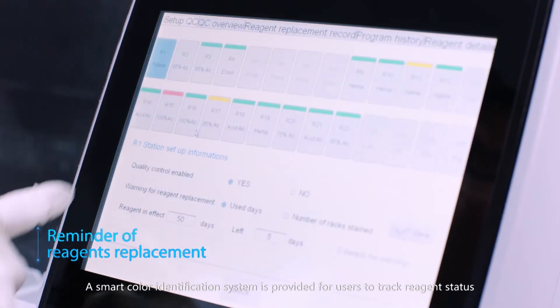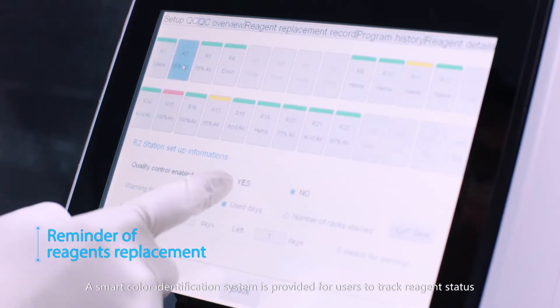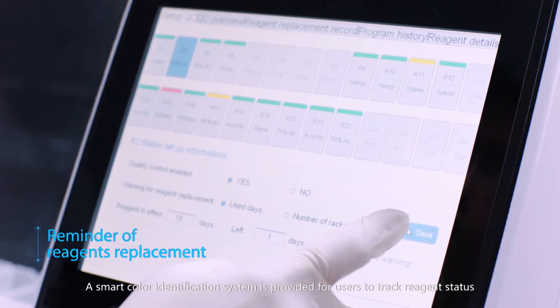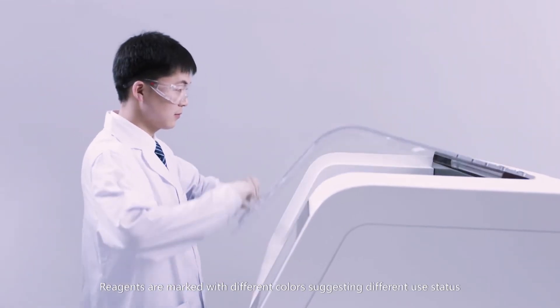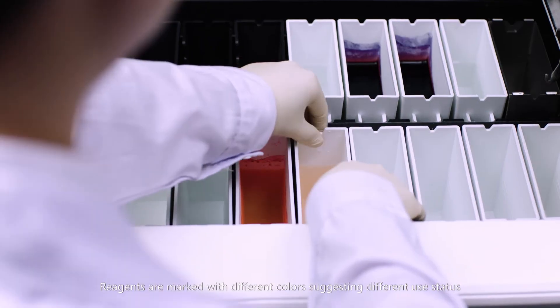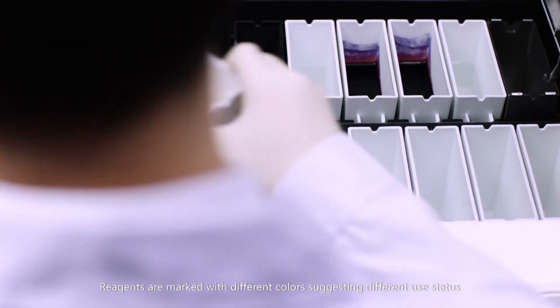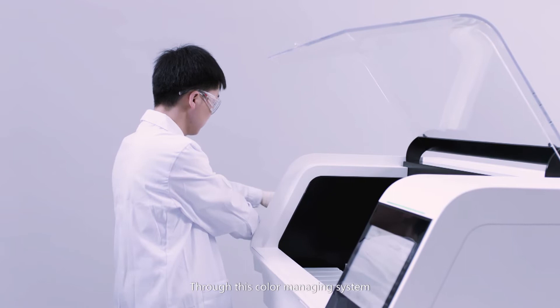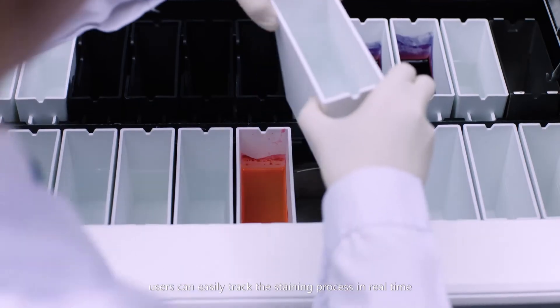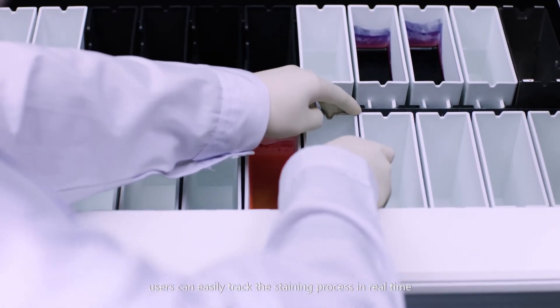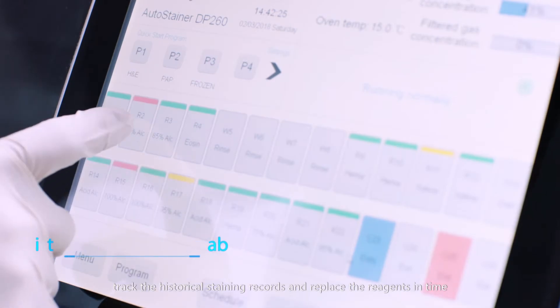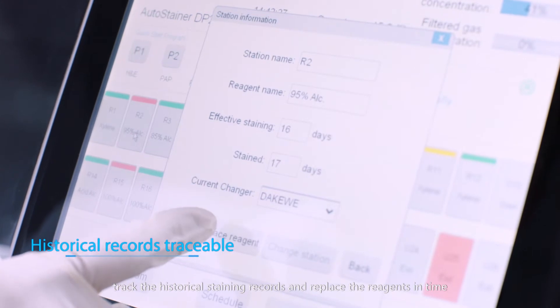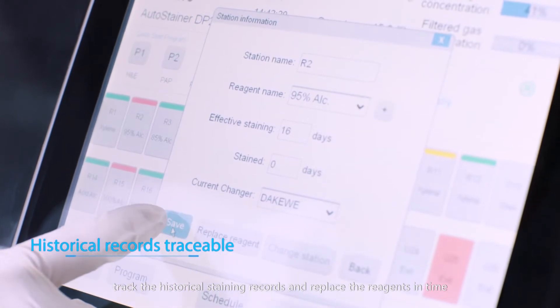A smart color identification system is provided for users to track reagent status. Reagents are marked with different colors suggesting different use status. Through this color managing system, users can easily track the staining process in real time and track the historical staining records and replace the reagents in time.